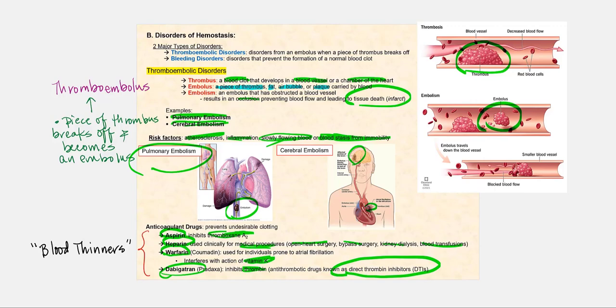Taken all together, they're referred to as blood thinners. But keep in mind, they are not thinning the blood per se. They're just preventing the formation of a blood clot. Do these anticoagulant drugs dissolve an existing blood clot? No, they do not. That's where tissue plasminogen activator, TPA, and urokinase comes in.